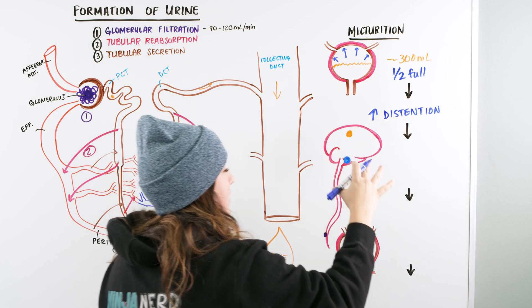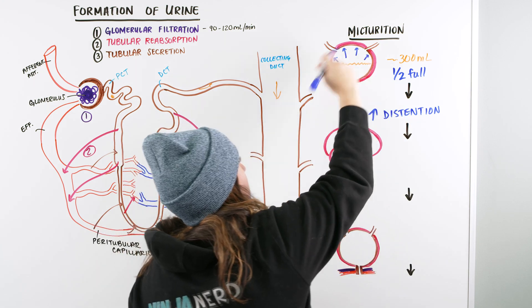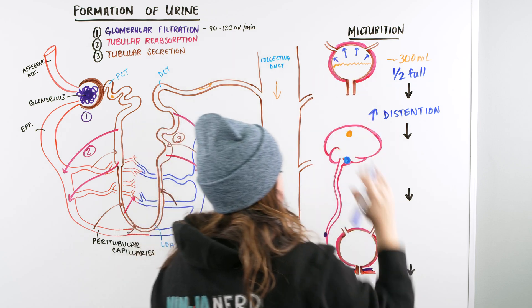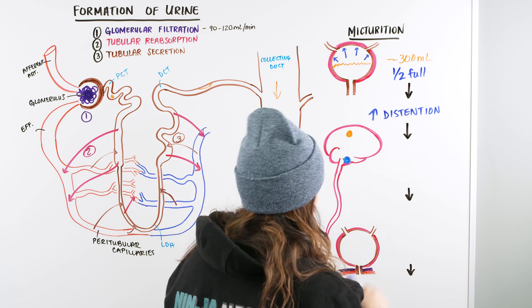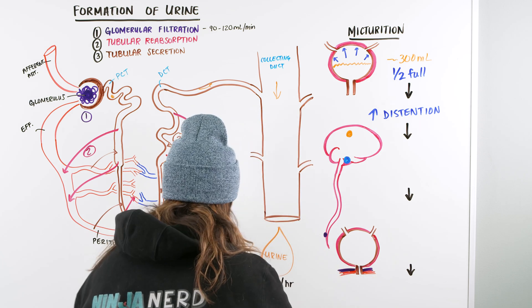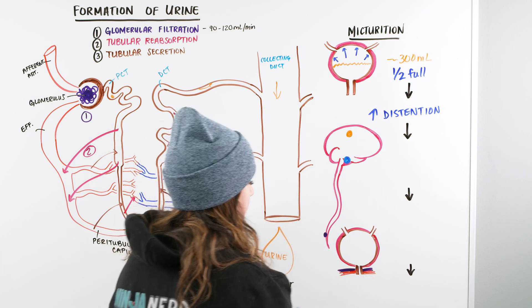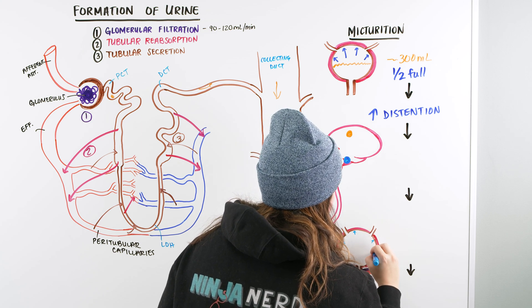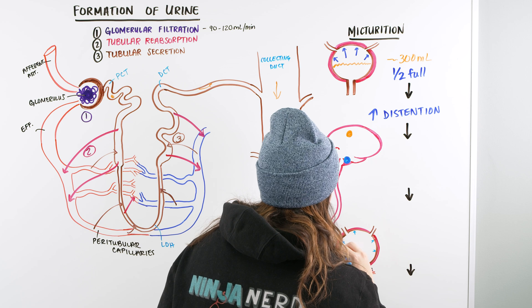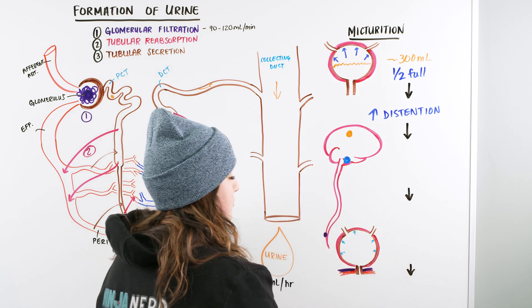So because of that, there are receptors on this wall, on the bladder wall, and they start to signal. They're like, hey, we're getting kind of full in here. We maybe should evacuate. So if you look down here on this bladder, we get that increase of pressure on the bladder's wall. So we start to get distension. That starts to send a sensory signal right here into our sacral.